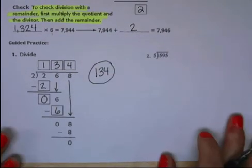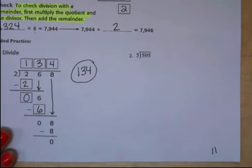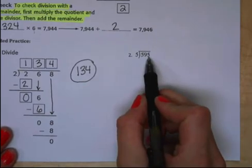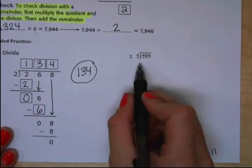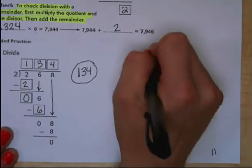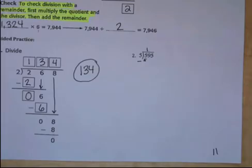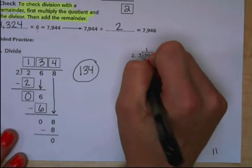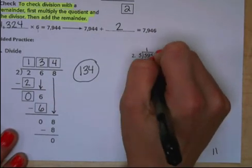Let's go ahead and do one more since I forgot to draw the arrows on that one. 595 divided by 5. Start with the hundreds place. 5 divided by 5 is 1. 5 times 1 is 5. And the lights went out. Hold on just a minute.